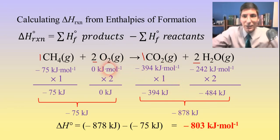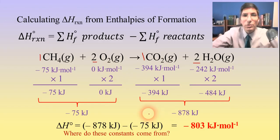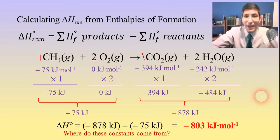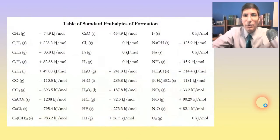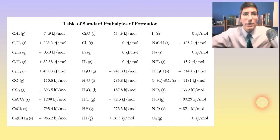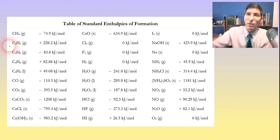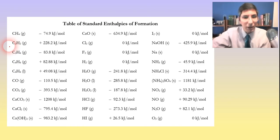Where do these constants come from — the negative 75 or negative 394 kilojoules per mole? They can be calculated experimentally, but for this class, your chemistry textbook or instructor will provide a table of standard enthalpies of formation that you can simply look up. You can also find extensive lists in larger chemistry and physics handbooks or online, which will help you work through homework problems.